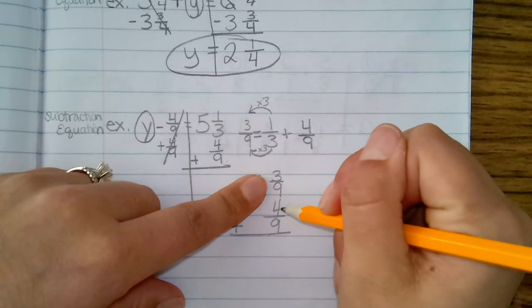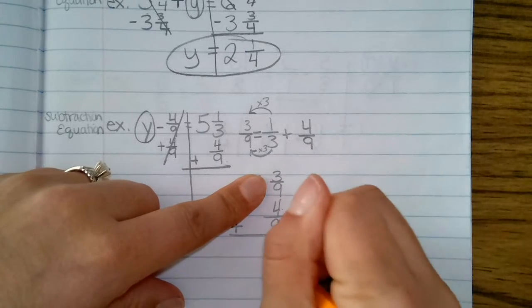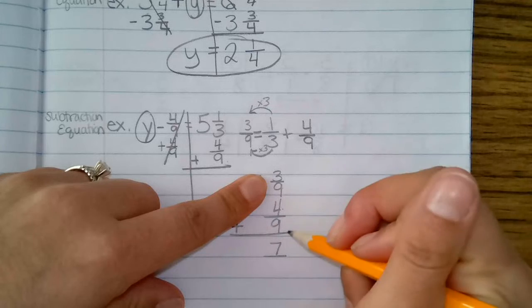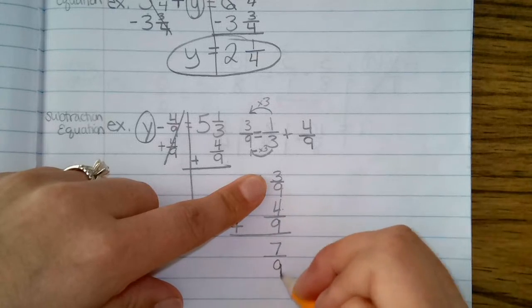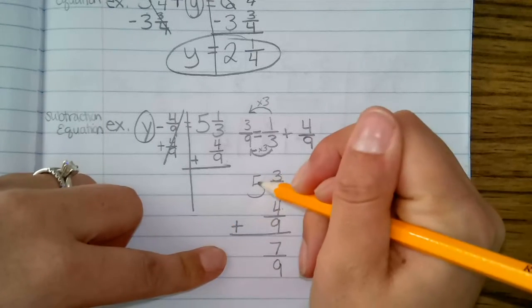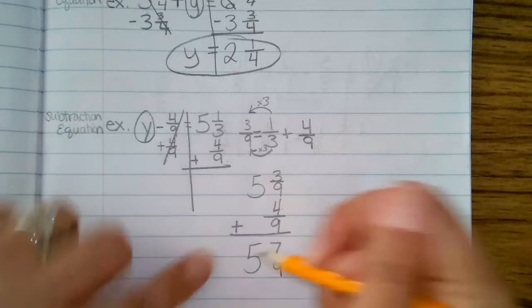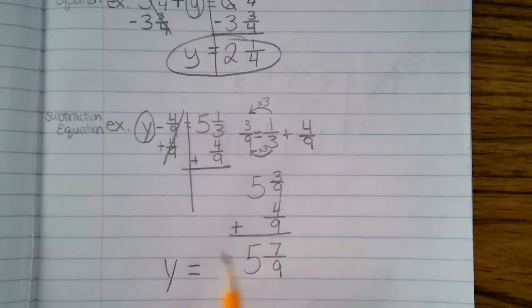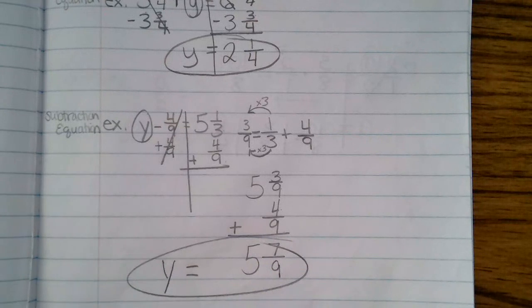What is three plus four? That is seven. My denominator stays the same, and I add my whole numbers. Five plus nothing is five, so y equals five and seven ninths.